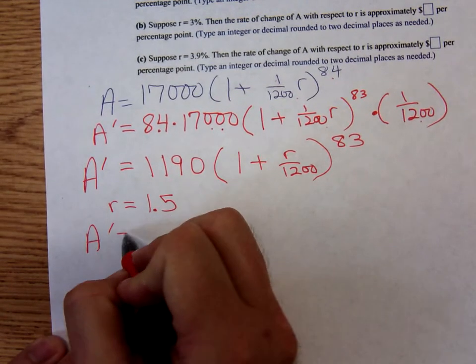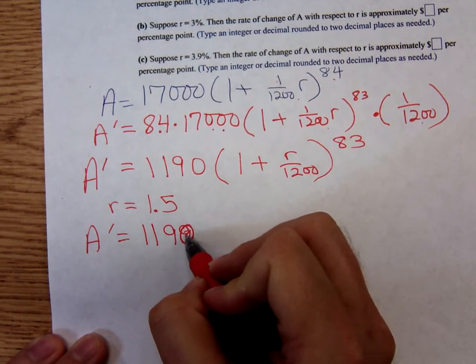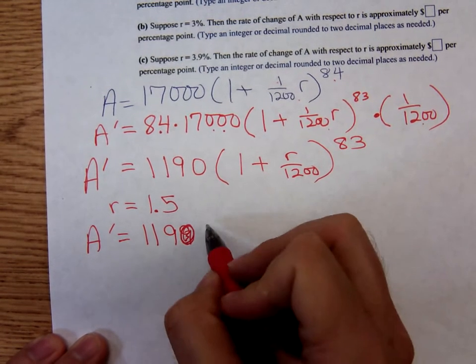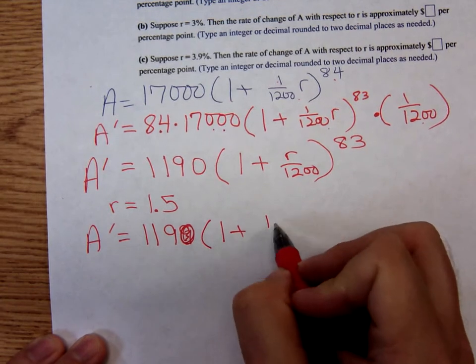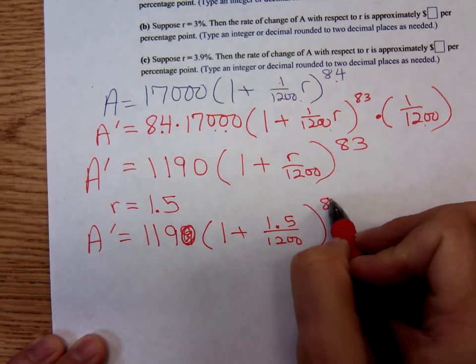So we're going to have A prime equals eleven ninety times one plus one point five over twelve hundred to the eighty-three power.